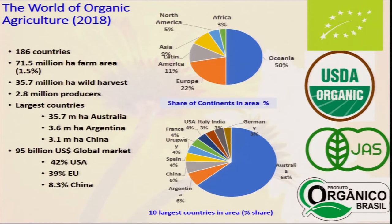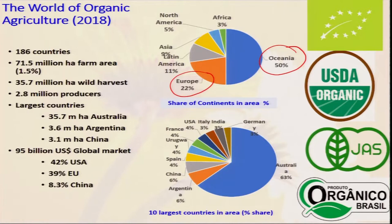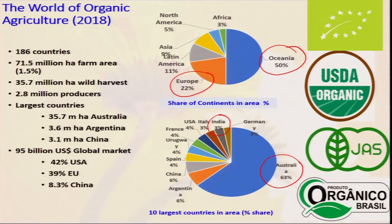Looking at world organic agriculture in 2008 — the total area is highest in Oceania, that is Australia, and second is Europe. Looking at country-wise data, Australia occupies 63 percent of the world area under organic farming due to it being a very large country with a small population. China, France, and India are comparatively less — India has only 3 percent of the total world area under organic farming. But India has a tremendous potential to be a major organic producer so that we can export organic food and earn a good amount of foreign exchange.